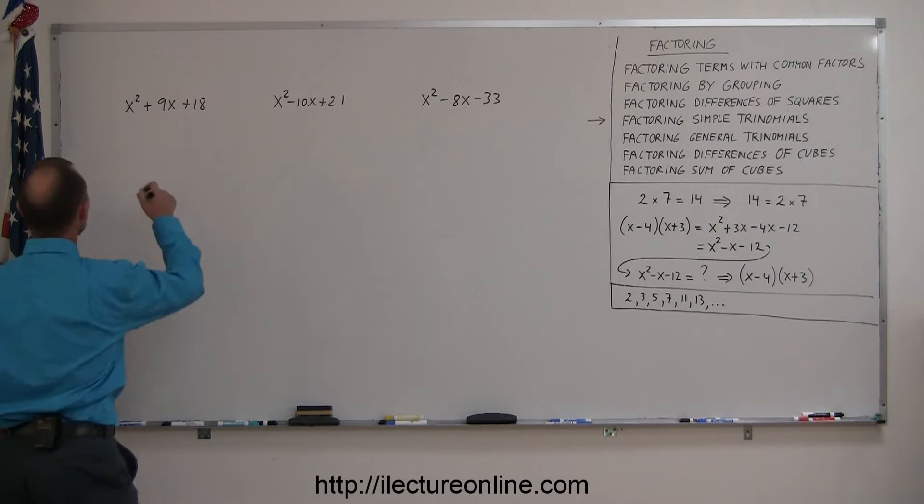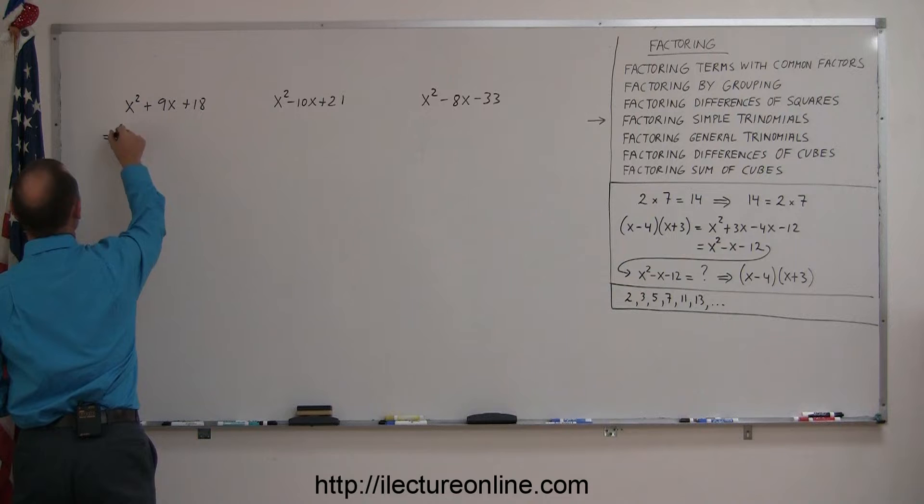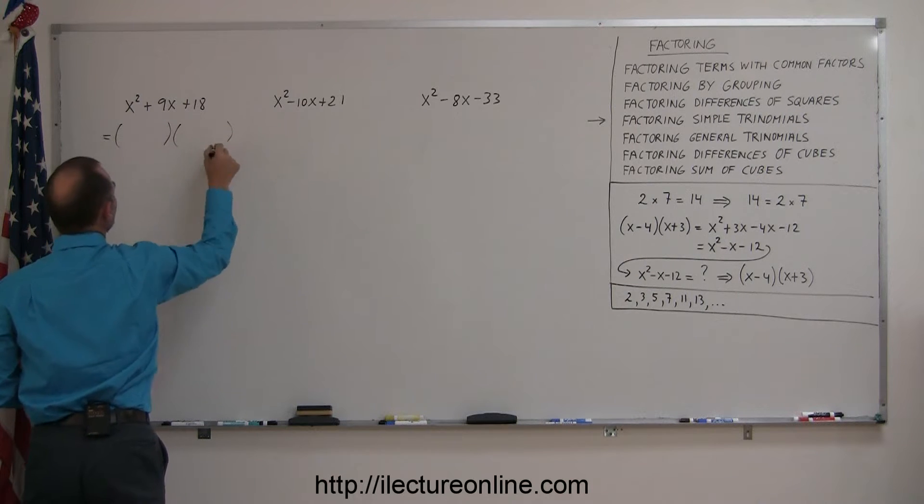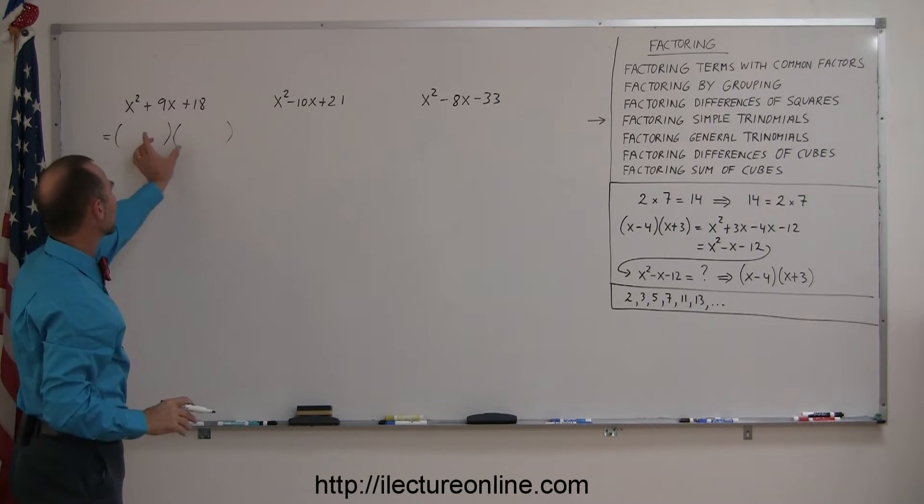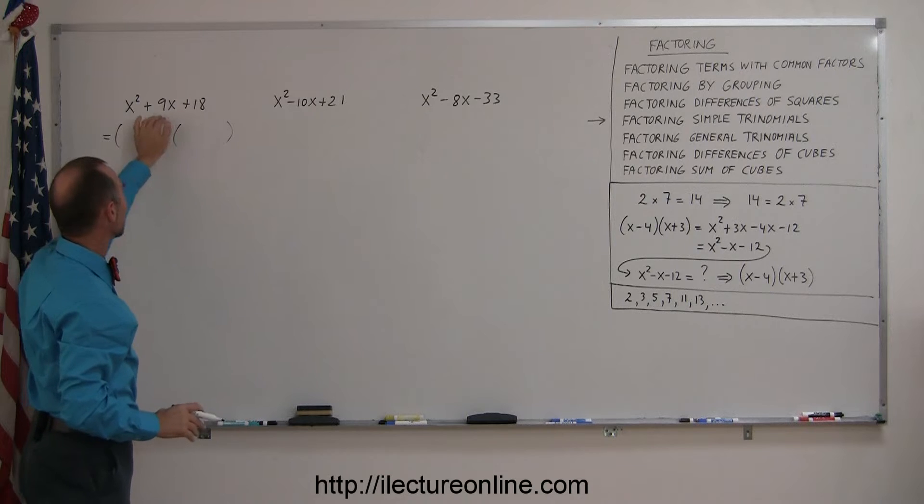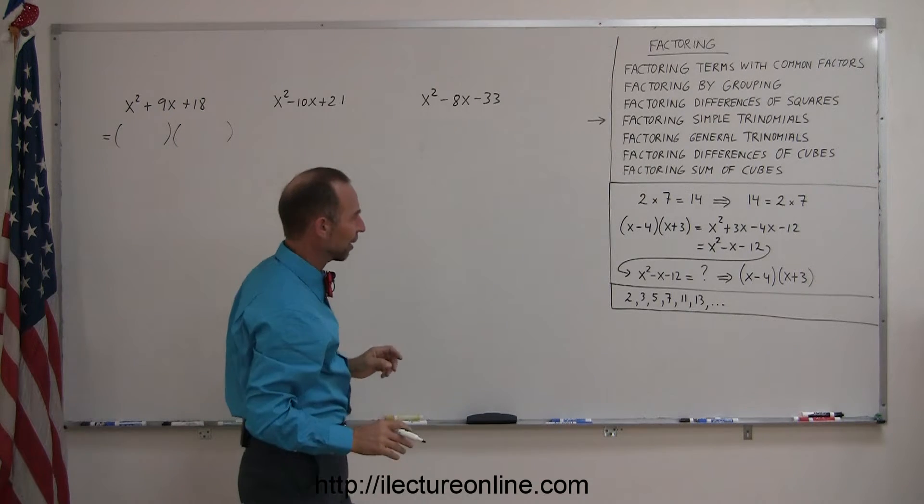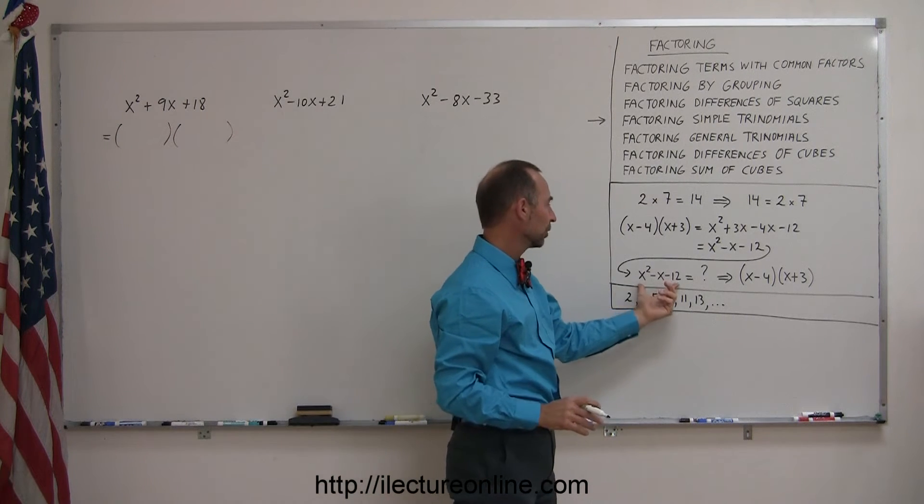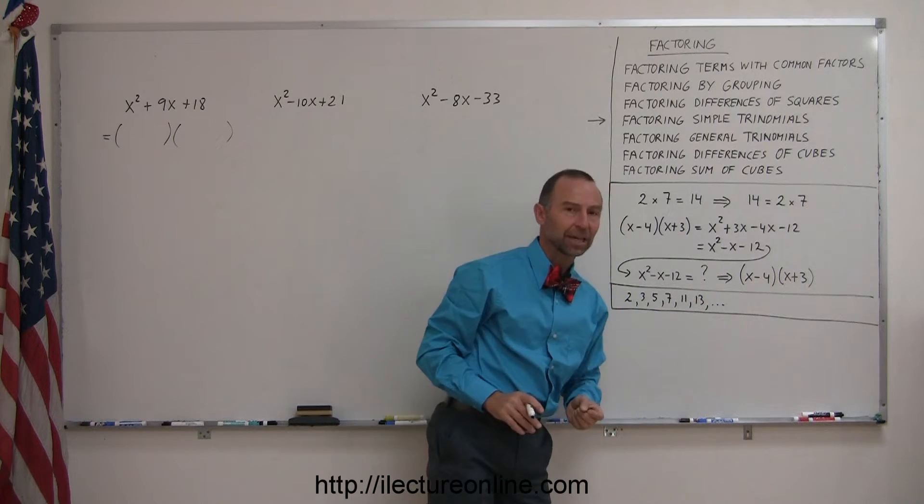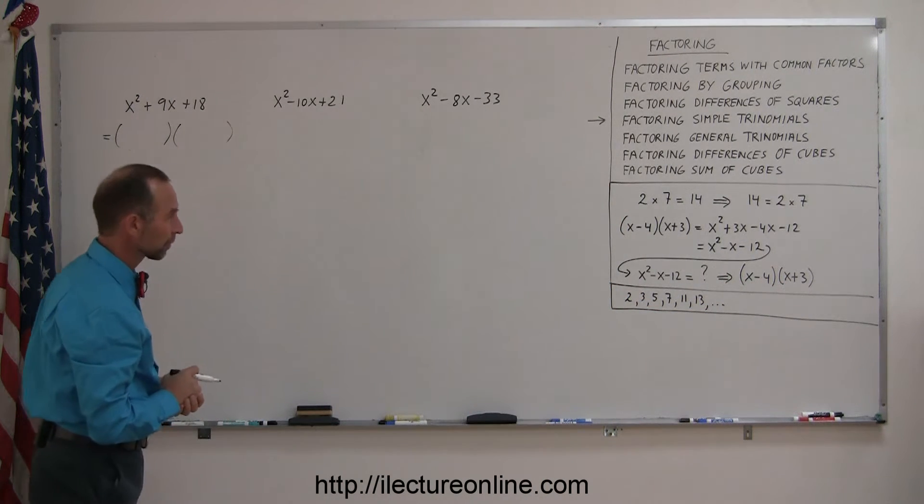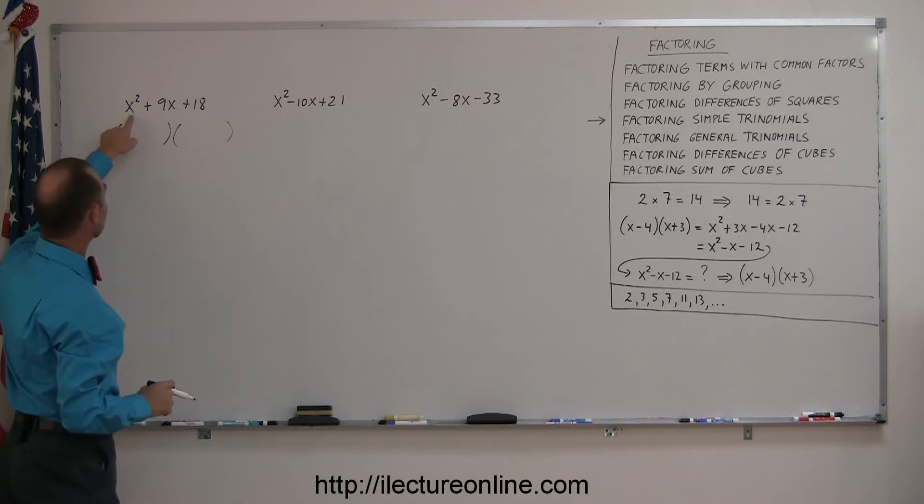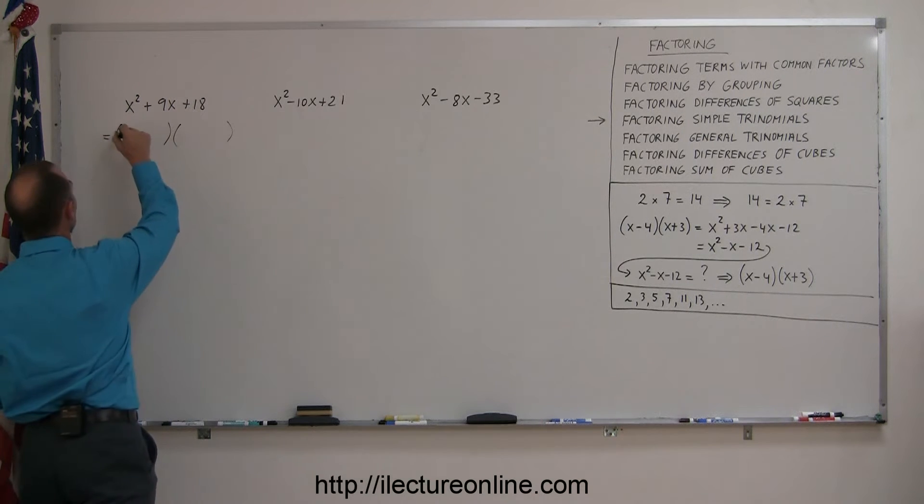The way I always look at these is that the result will be in this format. I'm going to have the product of two binomials as the factored form of that trinomial. We have a trinomial and it'll end up as a product of two binomials. Since the first term is an x squared, a 1x squared, I know that I have to have an x here and an x there.